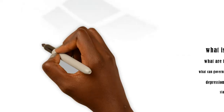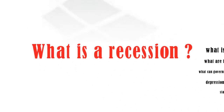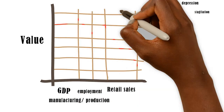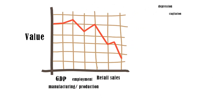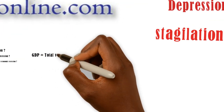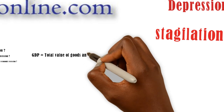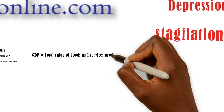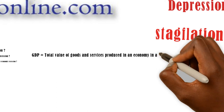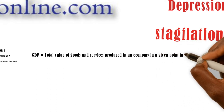What is a recession? Recession is when the economy ceases to expand or records a fall in GDP, employment, manufacturing, and retail sales for two consecutive quarters in a year. GDP is the total value of goods and services produced in an economy at a given point in time.